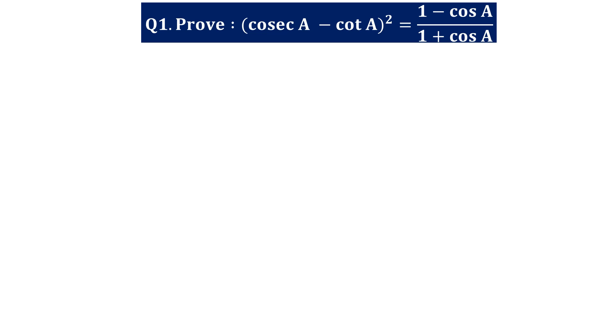Today's first question: prove that (cosec a − cot a)² = (1 − cos a)/(1 + cos a). Now here you must remember these are proof questions, so either you solve the left hand side to get the right hand side, or the right hand side to get the left hand side. You must never transfer terms from one side to the other, because these are proof questions. Here we will start from the left hand side and arrive at the right hand side.